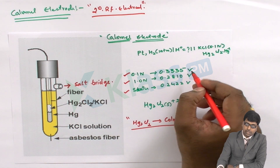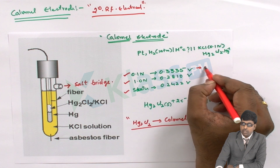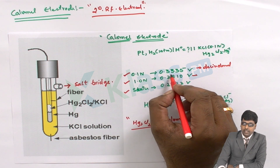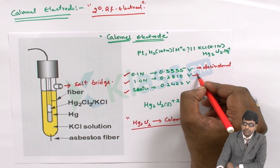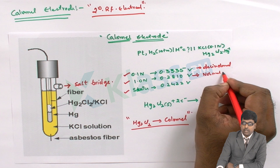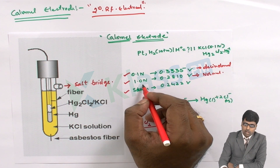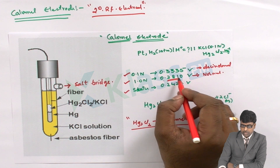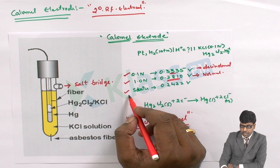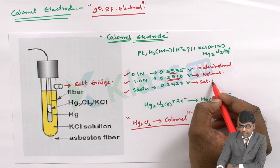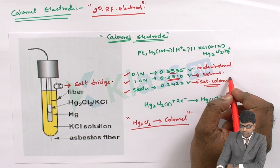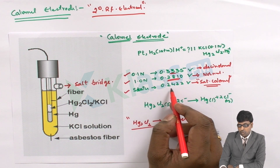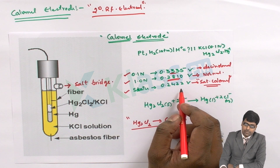If we take a 0.1 normal KCl solution, it is called the decinormal Calomel electrode and has a potential of 0.3335 volts. A one normal KCl solution gives a normal Calomel electrode with a potential of 0.2810 volts. A saturated KCl solution gives the saturated Calomel electrode, which is the most widely used reference electrode and has a potential of 0.2422 volts.